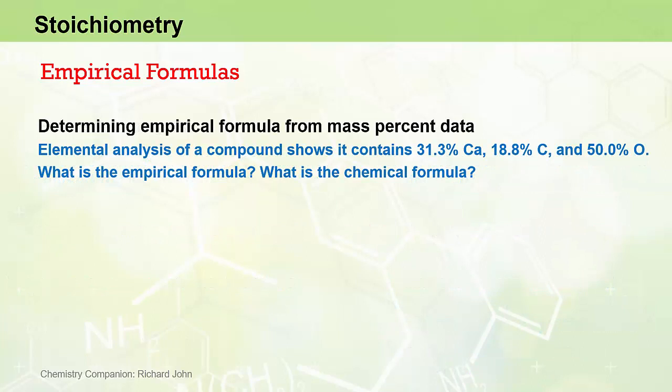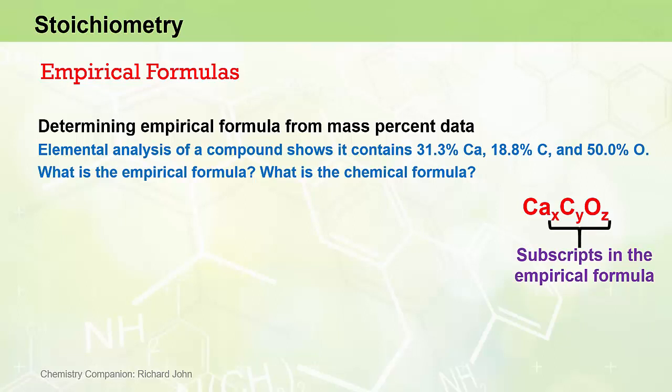A typical problem we might get is: elemental analysis of a compound shows 31.3% calcium, 18.8% carbon and 50.0% oxygen — determine the empirical formula and the chemical formula. We can write down an expression for the empirical formula straight away as CaX CY OZ, where the subscripts X, Y and Z are the whole number subscripts. If we can determine the numerical values of X, Y and Z, we effectively have the mole ratio and therefore the empirical formula.